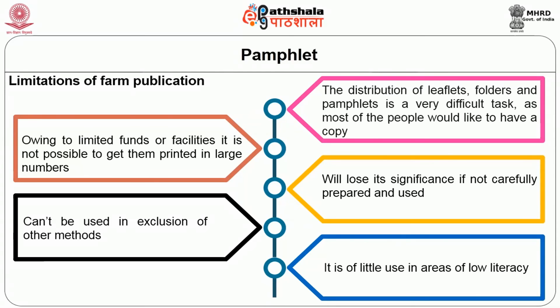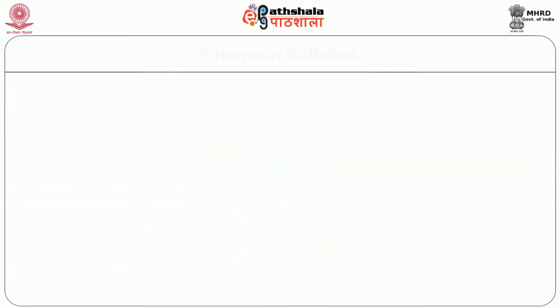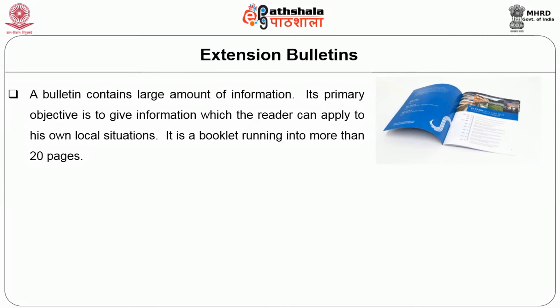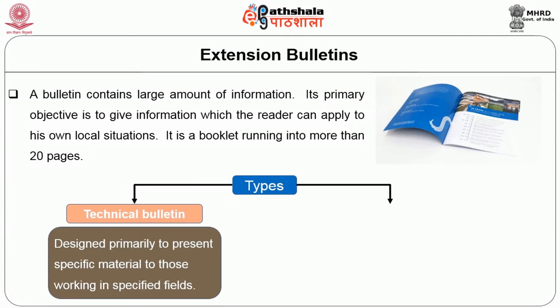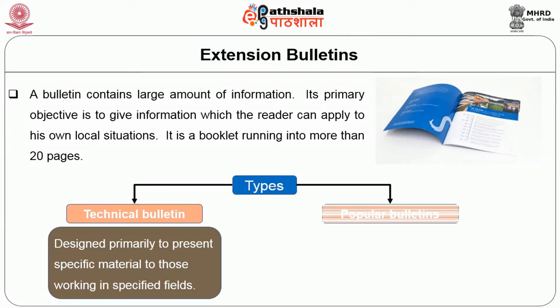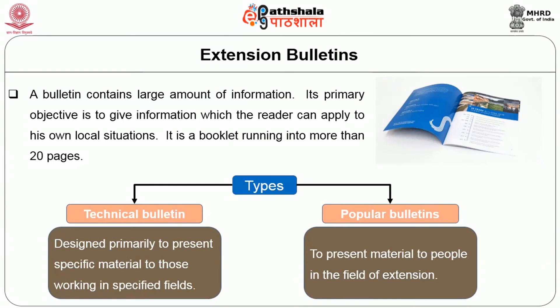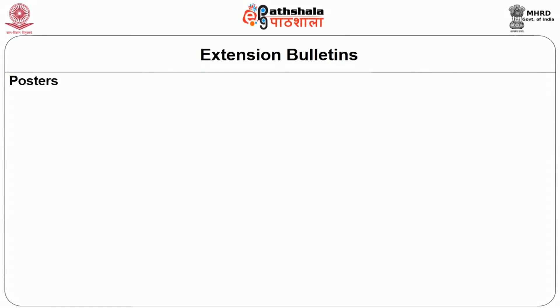An extension bulletin contains a large amount of information. Its primary objective is to give information which the reader can apply to their own local situation. It is a booklet running to more than 20 pages. There are various types of bulletins: technical bulletins, designed primarily to present specific material to those working in specified fields; and popular bulletins, used to present materials to people in the field of extension.